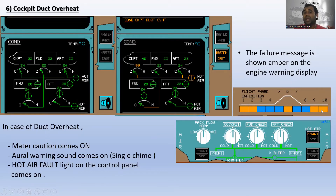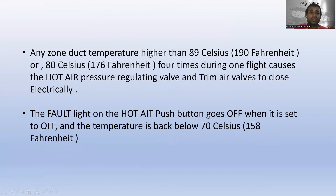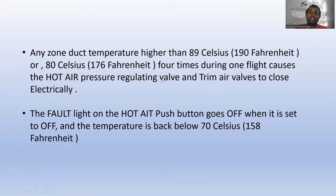Any zone duct temperature higher than 89°C, or 80°C four times during one flight, causes the hot air pressure regulating valve and trim air valve to close electrically. The fault light on the hot air push button goes off when set to off and the temperature returns below 70°C.